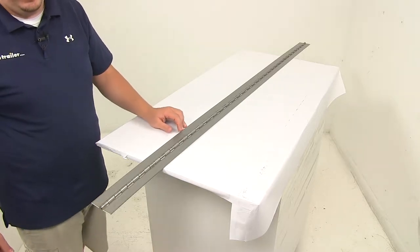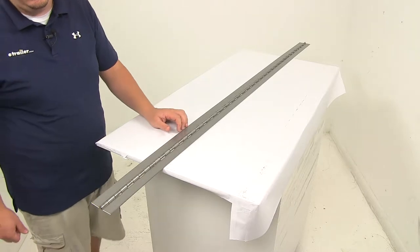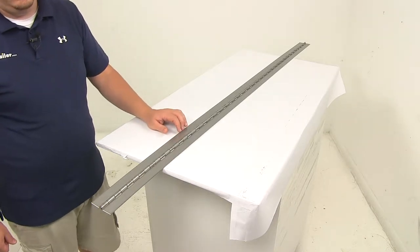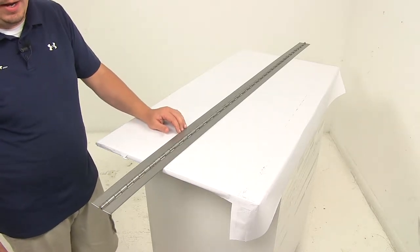Today we're going to be taking a look at the 3-inch wide continuous stainless steel hinge. It's going to measure 6 feet long. This is also called or known as a piano hinge.